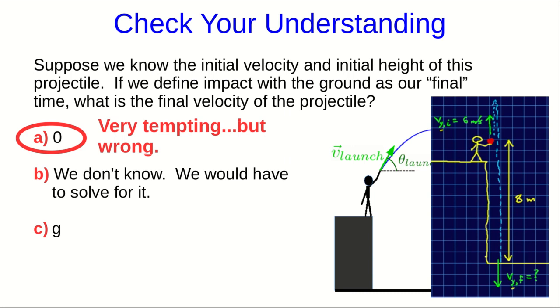C is very, very wrong because G is not a vector, and I've asked for a velocity, and so the answer has to be a vector. And also G is in meters per second squared and a velocity is in meters per second, so it definitely can't be C. But many students find it tempting at this point because they're still having trouble distinguishing between accelerations and velocities.